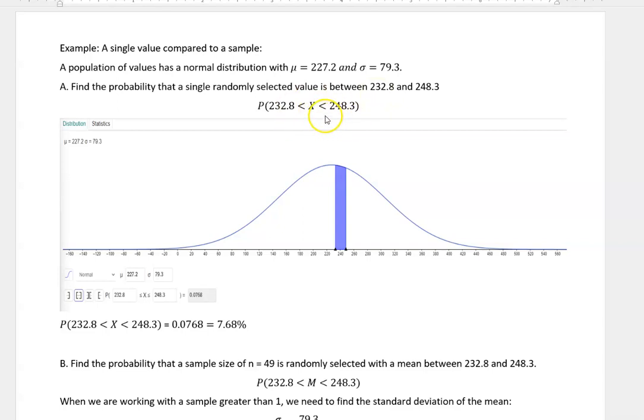And so this is what we're actually looking for on GeoGebra. You're going to enter your mean of 227.2 down here, you're going to enter your standard deviation of 79.3, and then we want to know if it's between those two values so I click on that between button and enter the two values I'm interested in.